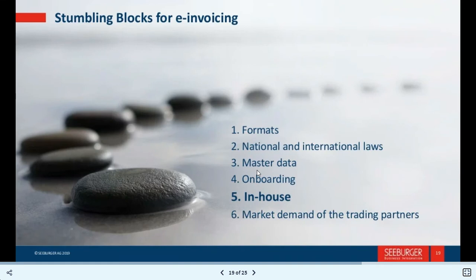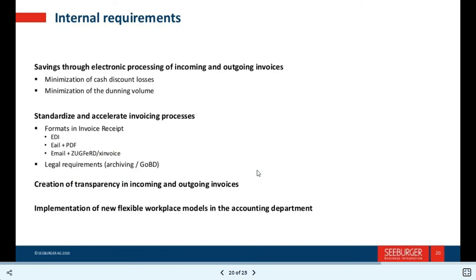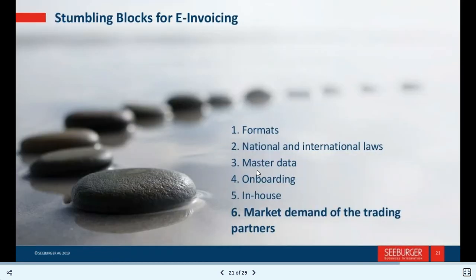The fifth stumbling block — and also a benefit — is in-house savings from electronic processing of incoming and outgoing invoices. Benefits include: minimization of cash discount losses, minimization of printing volume, standardized and accelerated invoicing processes, handling invoices received via EDI and email plus PDF, legal requirement archiving, creation of transparency in incoming and outgoing invoices, and implementation of new flexible work models in the accounting department.